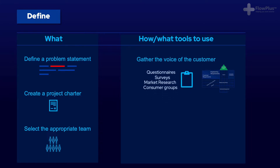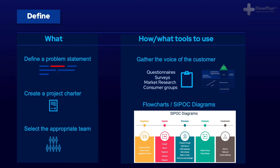If you think back to the Quality Function Deployment module, these are the traits that the customer wants in their product or service. Other tools that could be used include flowcharts or SIPOC diagrams. SIPOC stands for Supplier, Input, Process, Output and Customer. A SIPOC diagram is a high-level overview of the entire value stream from supplier all the way to customer, and it's a great way to identify where the scope of your project lies.